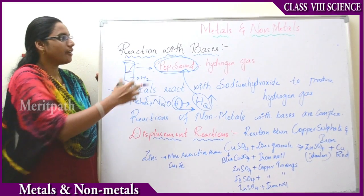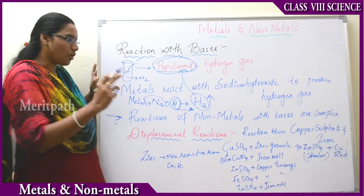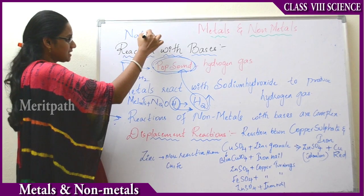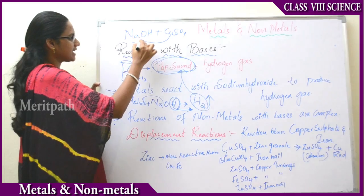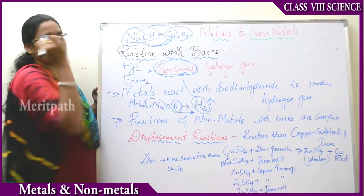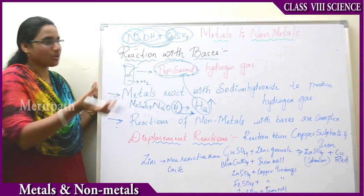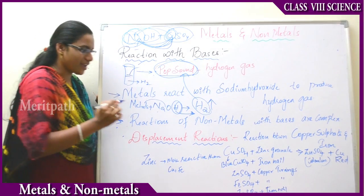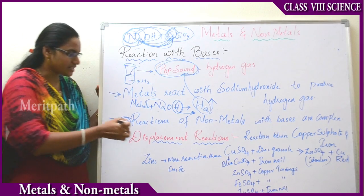Now let us see how to differentiate metals and non-metals using reactions with bases. The reaction of non-metals with bases is very complex because it involves displacement reactions. For example, in a displacement reaction with copper sulfate, copper is displaced from copper sulfate and moves towards sodium hydroxide, while sodium molecules are displaced towards copper sulfate — this is called a double displacement reaction.